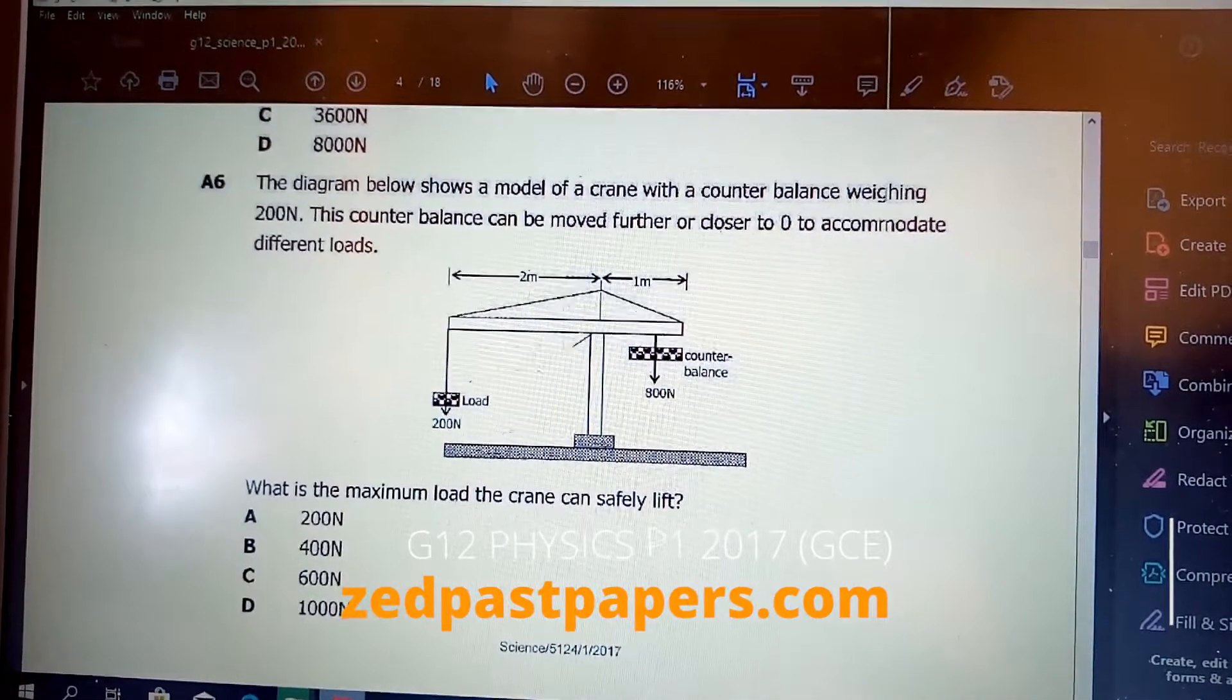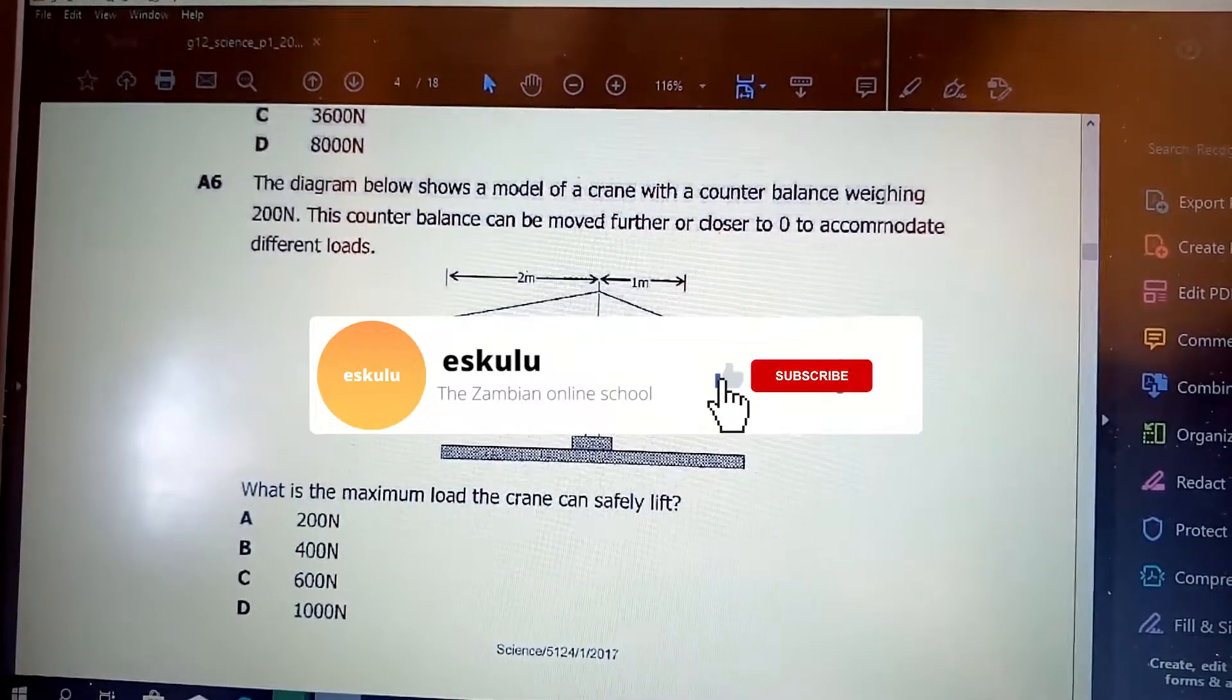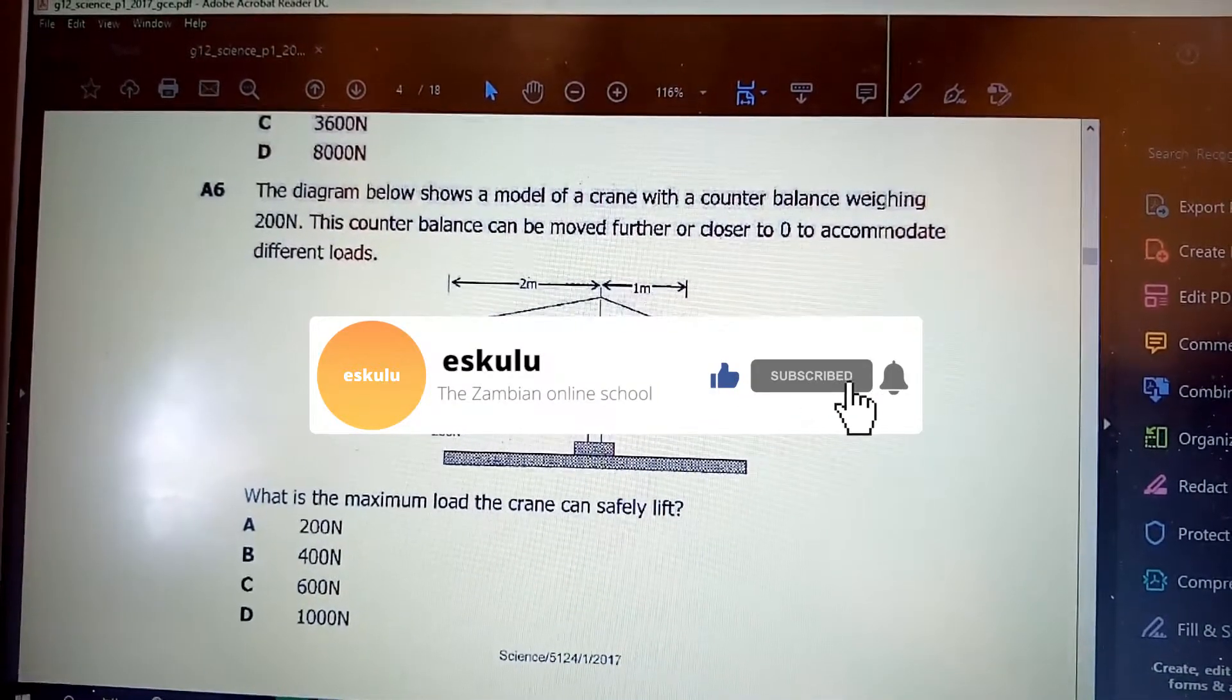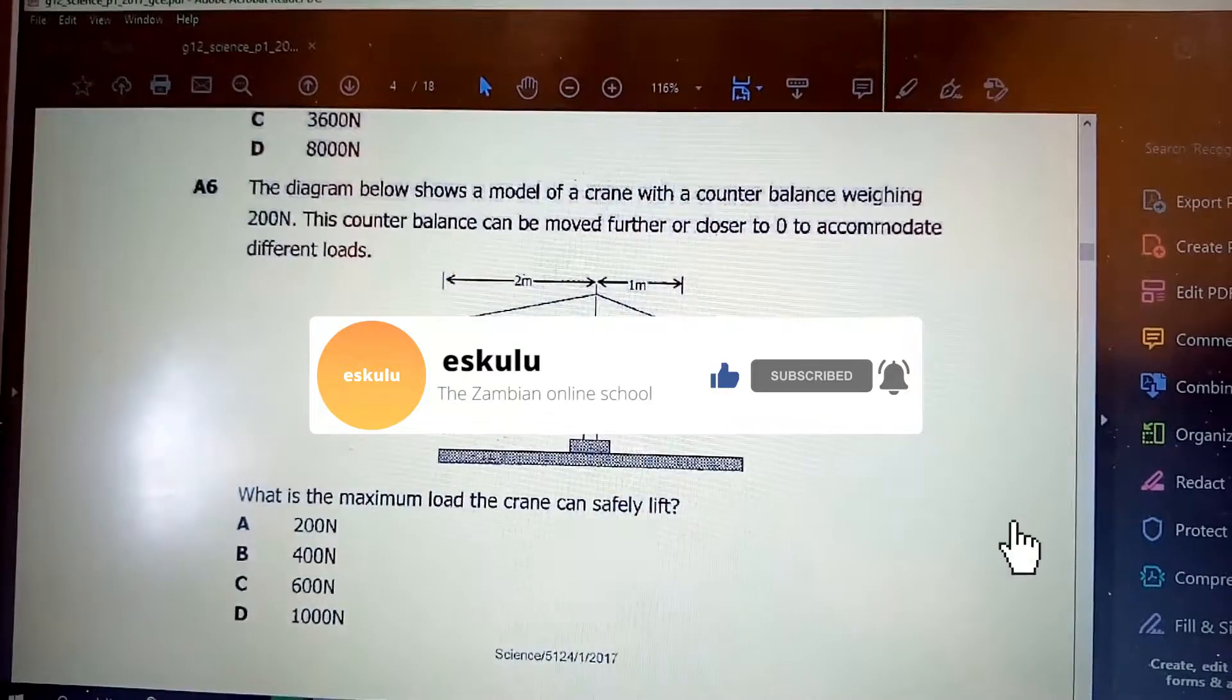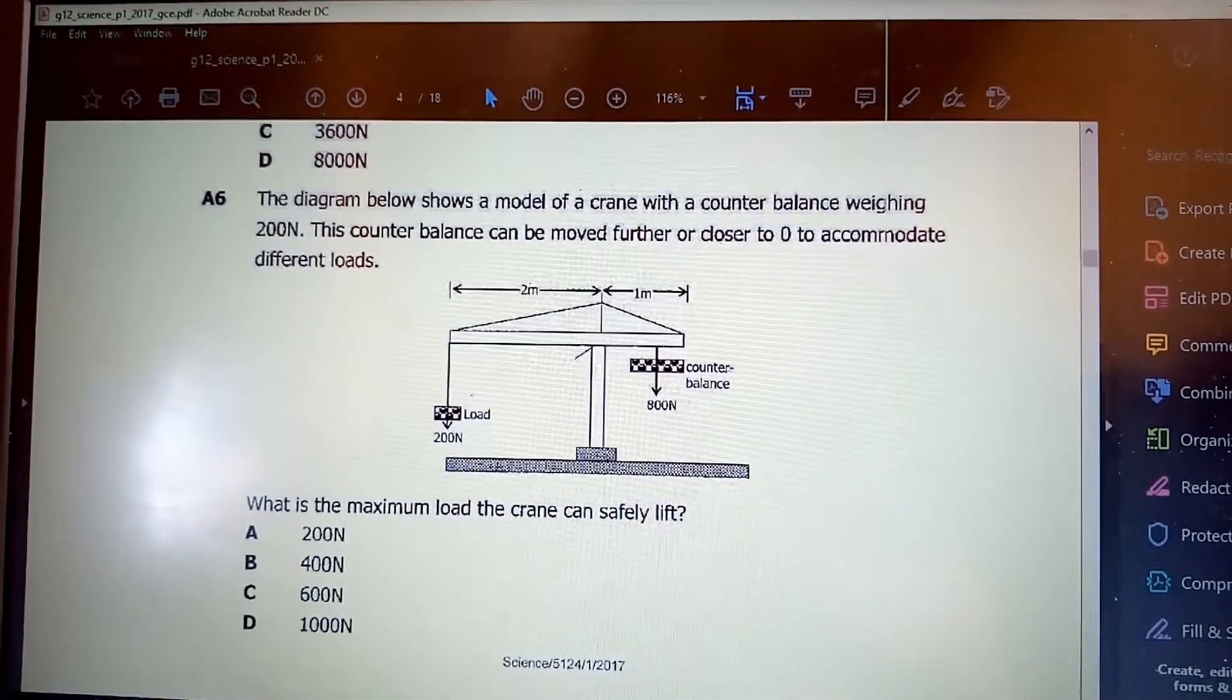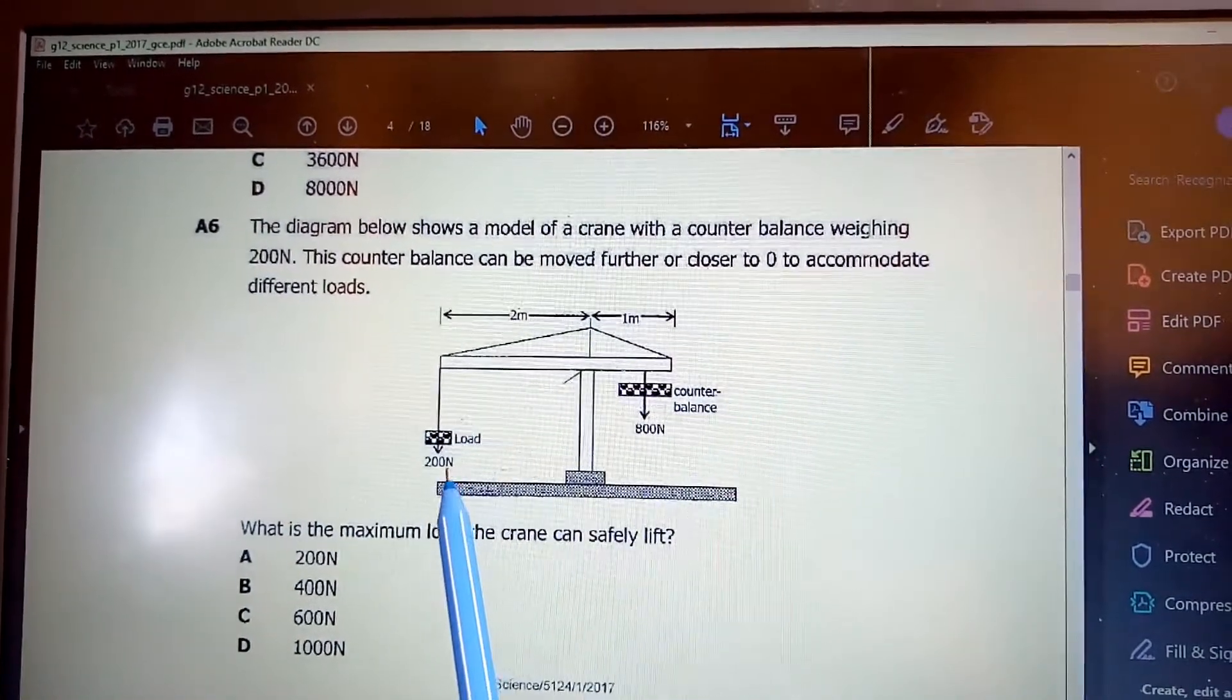Let's look at question 6. The diagram below shows a model of a crane with a counterbalance weighing 200 newtons. This counterbalance can be moved further or closer to zero to accommodate different loads. What is the maximum load the crane can safely lift? We've got a situation here - the counterbalance is not the 200 newtons, this is the load, and then the counterbalance is the 800 newtons.